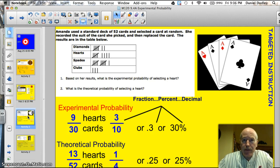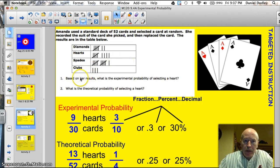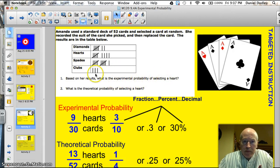All right, so Amanda uses a standard deck of cards, 52 cards, and she selects a card at random. She records the suit of the card she picked, and then she replaced the card, and the results are shown in the table below. So she put the card back in, so there's always 52 cards. So here's what happened. Based upon the results, this table above here, what was the experimental probability of selecting a heart?